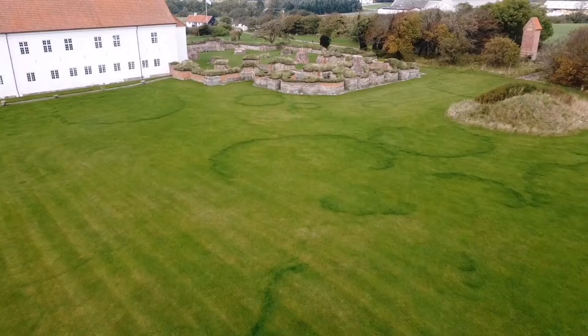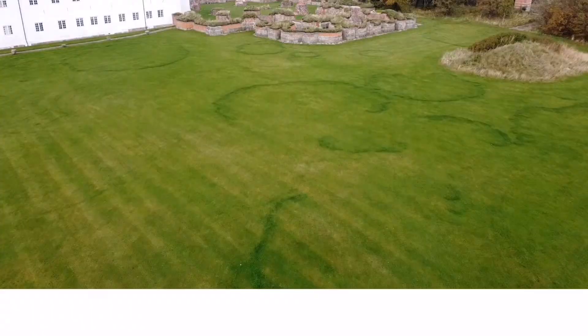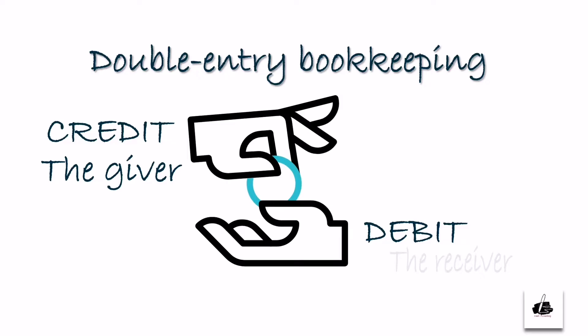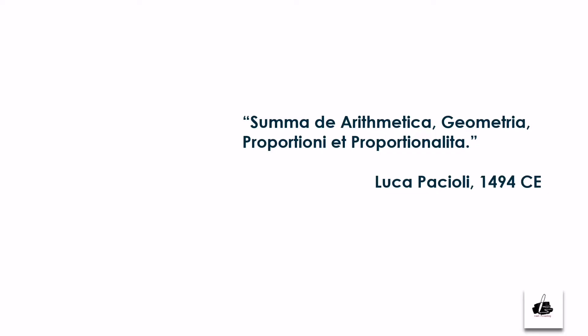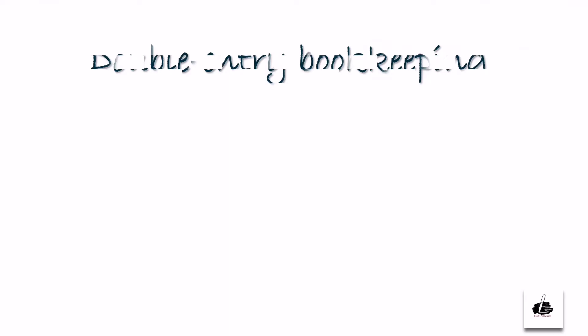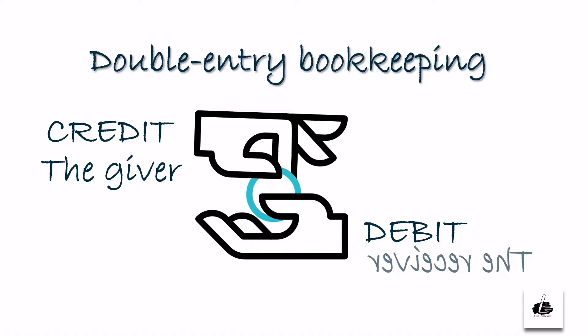In 1494 CE, a Franciscan monk named Luca Pacioli, an Italian mathematician, published the first book on double entry in the city of Venice. He titled the book in Italian as Summa di Aritmetica, Geometria, Proporzioni et Proporzionalita, which includes the first known written description of double entry bookkeeping. The double entry system has since then become an important tool used largely in accounting. Hence, he is referred to as the father of accounting.